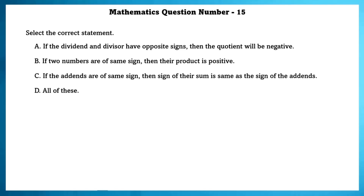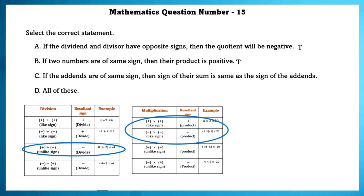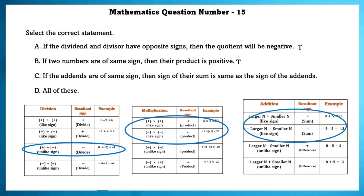Mathematics question number 15. Select the correct statement. If the dividend and divisor have opposite signs, the quotient will be negative — this is true. If 2 numbers are of the same sign, their product is positive — this is also true. If the addends are all of the same sign, the sign of their sum is the same as the sign of the addends — this is true.